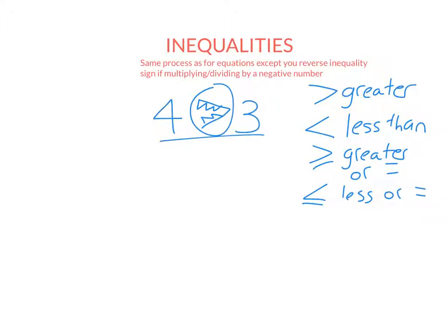So here is a statement. 4 is greater than 3. But of course, we're going to look at ones that involve letters again. So this statement here means x is less than 3. It just means x is a number less than 3. So what we can do is we can graph all the solutions on a number line.